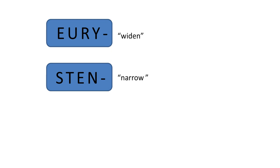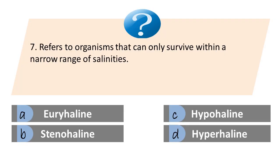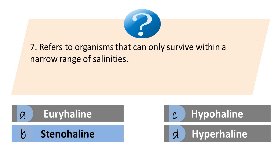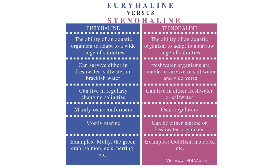Another prefix is eury, which means wide or widen, and steno, which means narrow. This refers to organisms that can only survive within a narrow range of salinities. A. Euryhaline. B. Stenohaline. C. Hypohaline. D. Hyperhaline. The answer is B. Stenohaline — steno means narrow.